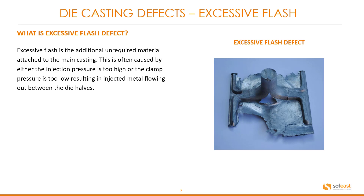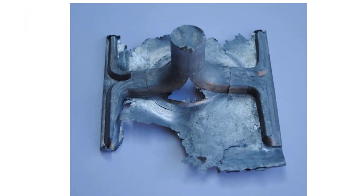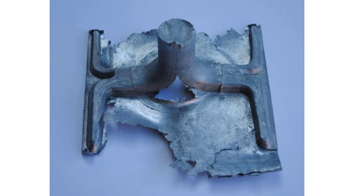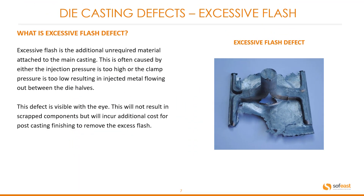Excessive flash. What is an excessive flash defect? Excessive flash is the additional unrequired material attached to the main casting. This is often caused by either the injection pressure being too high or the clamp pressure being too low, resulting in the injected metal flowing out between the die halves. The image on the right clearly shows this casting has way too much flash. This defect is visible with the eye. This will not result in scrapped components but will incur additional cost for post-casting finishing to remove the excess flash.